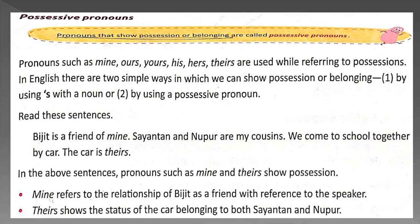Let us read the sentences. Bidzit is a friend of mine. Sayanandan and Nipur are my cousins. We come to school together by car. The car is theirs. In these sentences, pronouns such as 'mine' and 'theirs' show possession or belonging or ownership. 'Mine' refers to the relationship of Bidzit as a friend with reference to the speaker. 'Theirs' shows the status of the car belonging to both Satyanandan and Nipur.